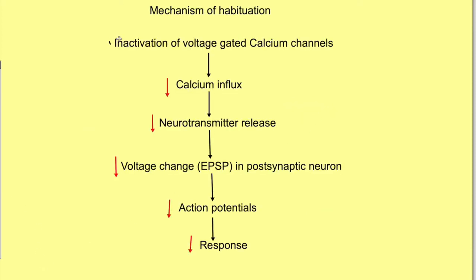This decrease in response occurs due to inactivation of calcium channels in the presynaptic neuron — the neuron carrying information about the stimulus. If calcium channels are inactivated, there is decreased entry of calcium into the presynaptic neuron, causing a decrease in intracellular calcium. Since calcium is responsible for neurotransmitter release, decreased intracellular calcium causes decreased neurotransmitter release. Less neurotransmitter acting on the postsynaptic neuron means decreased voltage change, fewer action potentials generated, or no action potential at all if the threshold is not reached.